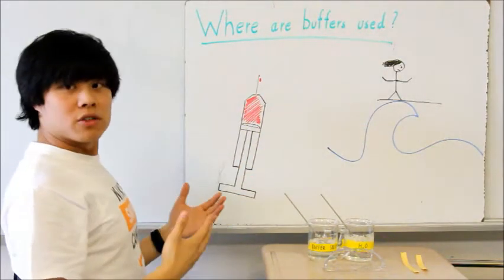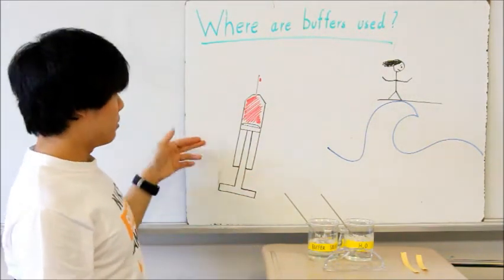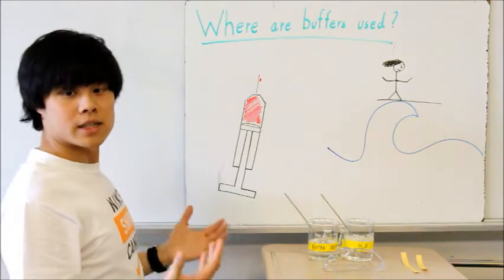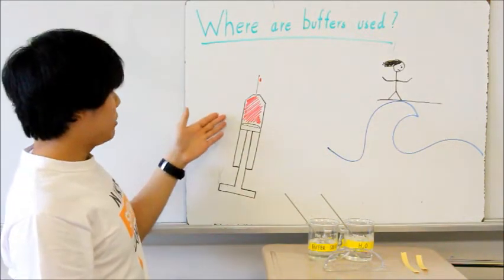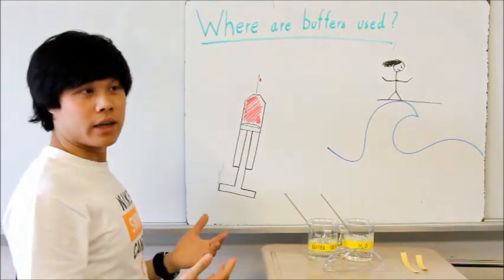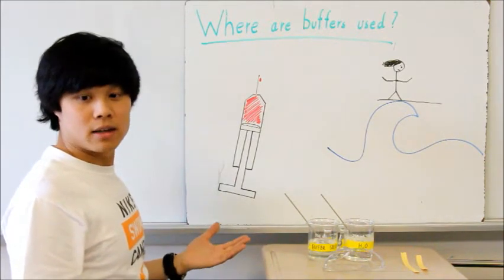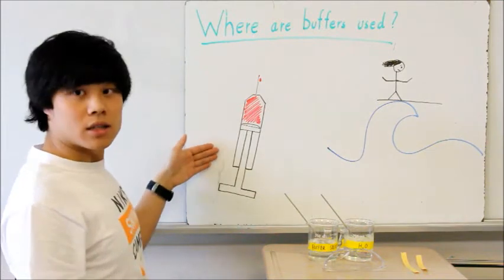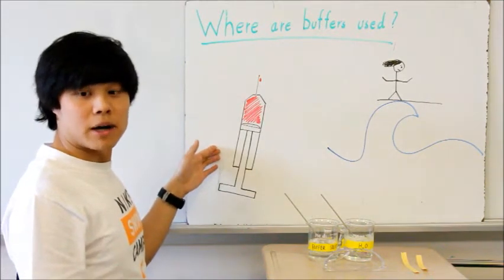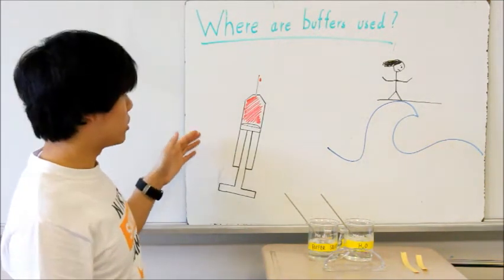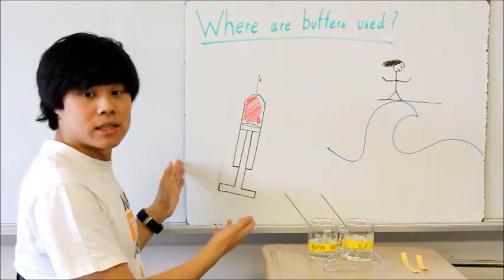Now, where are buffers used in real life? Blood and oceans would be a great example. For example, when you consume an acidic fruit, like a citrus, your pH in your body doesn't suddenly become acidic, or else you would be dead. Therefore, the body uses a carbonic acid bicarbonate buffer in order to neutralize the added acid or base into your body.